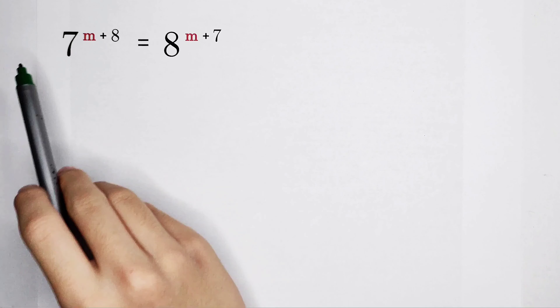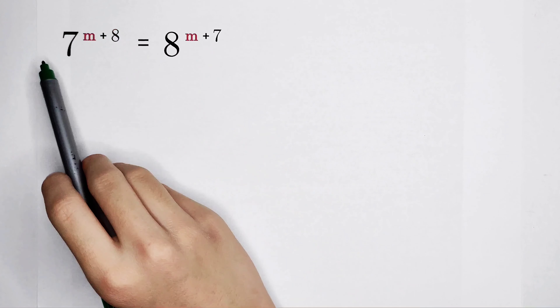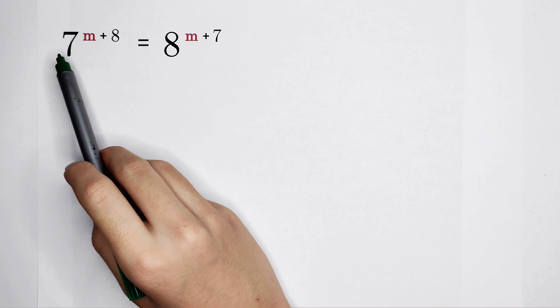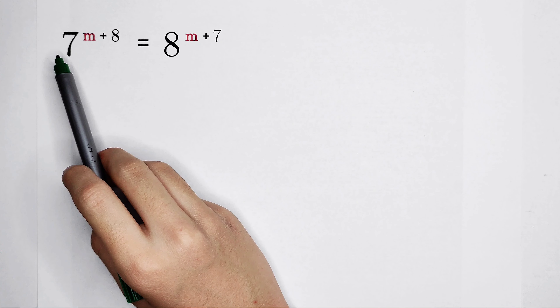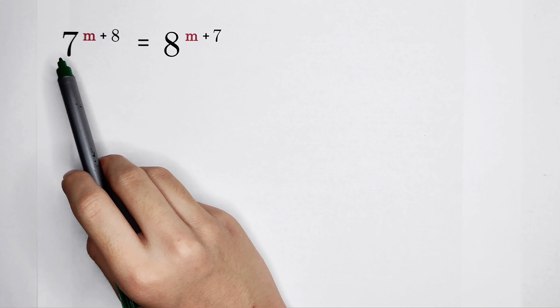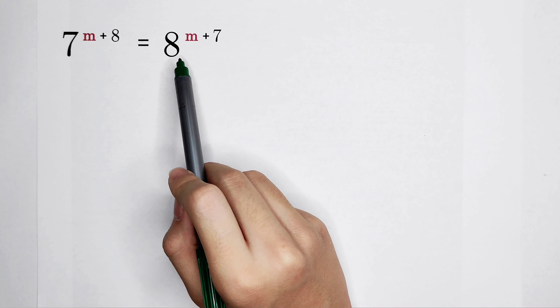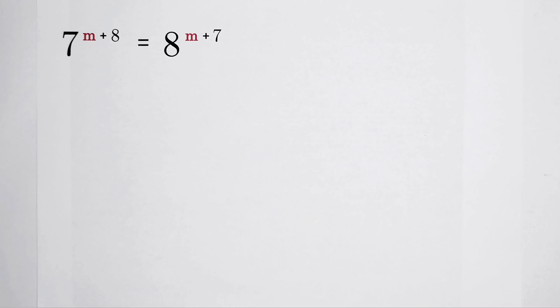Welcome back to Math Window. Solve this equation about m: 7 to the power of m plus 8 is equal to 8 to the power of m plus 7.